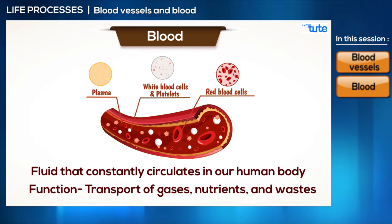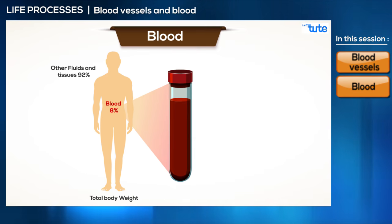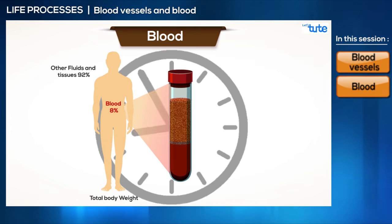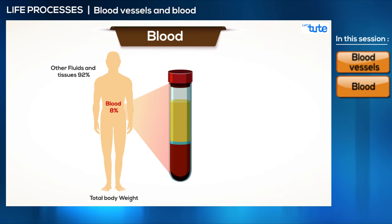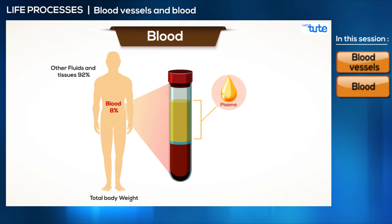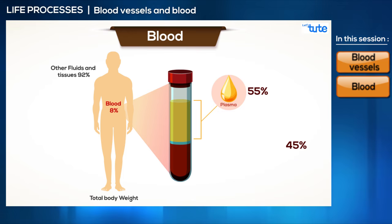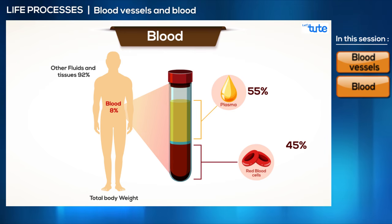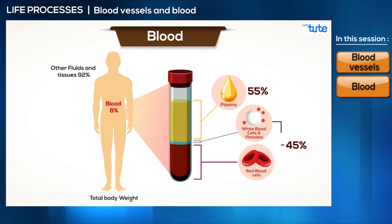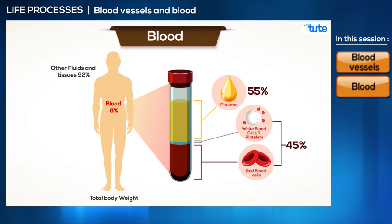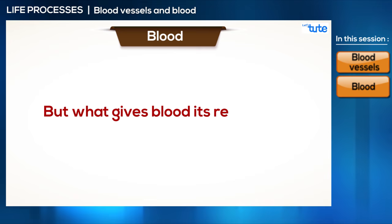To study the composition of blood, let's carry out a small experiment. We collect some blood from a person in a tube and allow it to stand still for a few hours. We can see that the cells deposit at the bottom and the fluid remains on top. This yellowish-white fluid is called plasma. 55% of the blood is composed of plasma. The remaining 45% is the cellular component, which includes red blood cells (RBCs or erythrocytes), white blood cells (WBCs or leukocytes), and platelets.